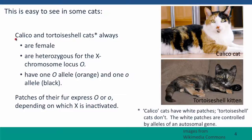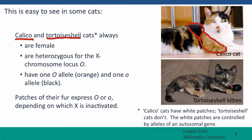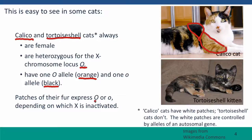Calico and tortoiseshell cats — these terms both refer to cats that have patches of orange fur and patches of black fur. In a calico cat, there are also patches of white fur, which are controlled by a different gene. In a tortoiseshell cat, that term is applied to cats that don't have white patches. Calico and tortoiseshell cats are always female. They're heterozygous — they have two X chromosomes — and their X chromosomes are heterozygous for an X chromosome locus called O, for orange. They have one allele that would produce orange fur and one allele that would produce black fur. So patches of their fur express orange or black depending on which X was inactivated early in development.